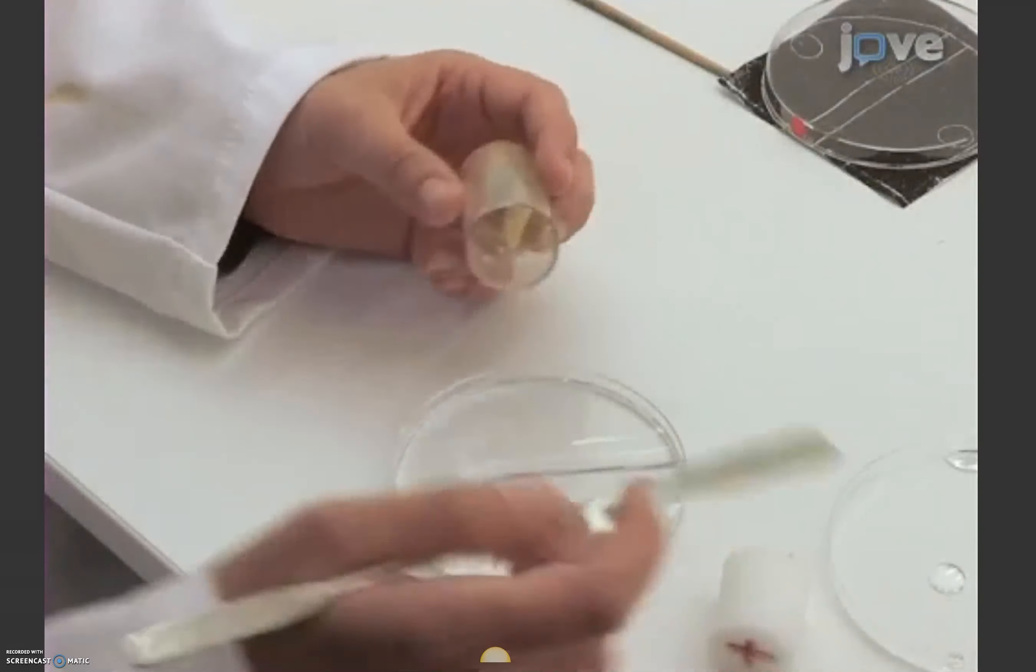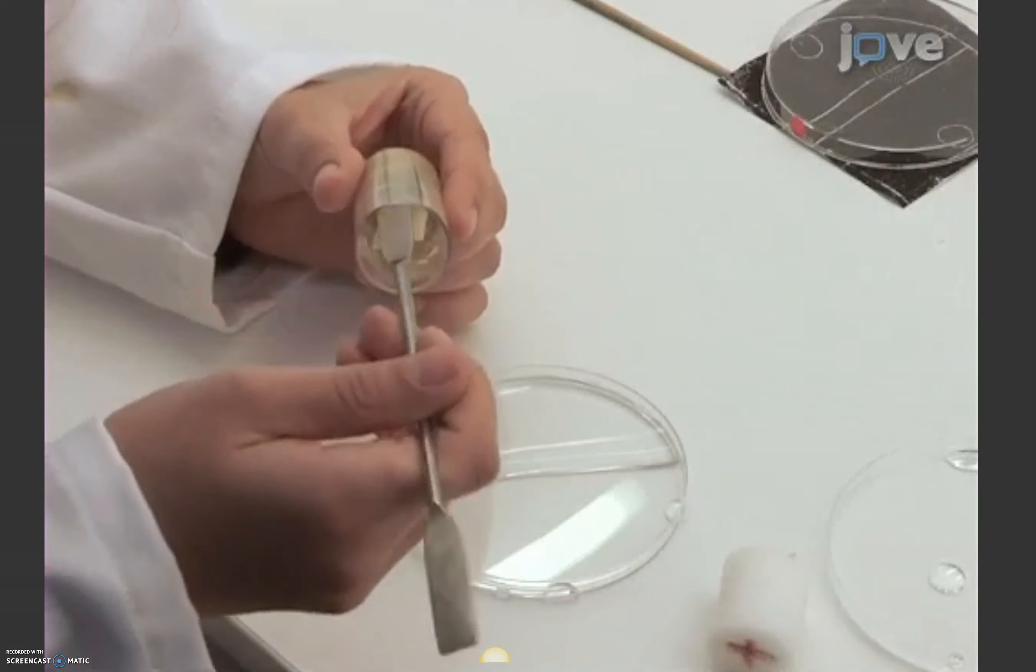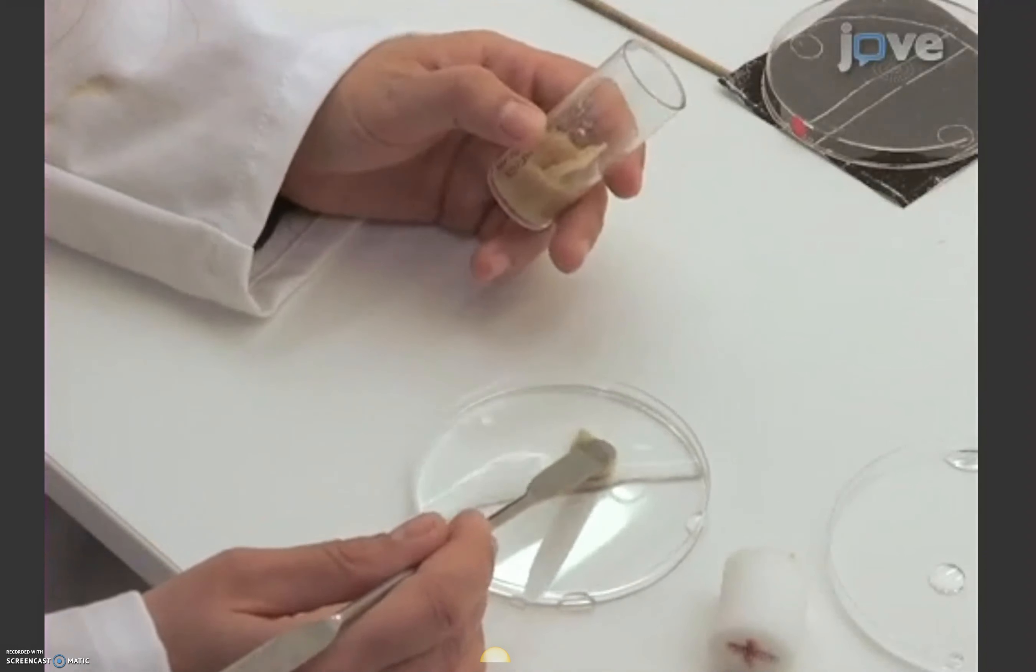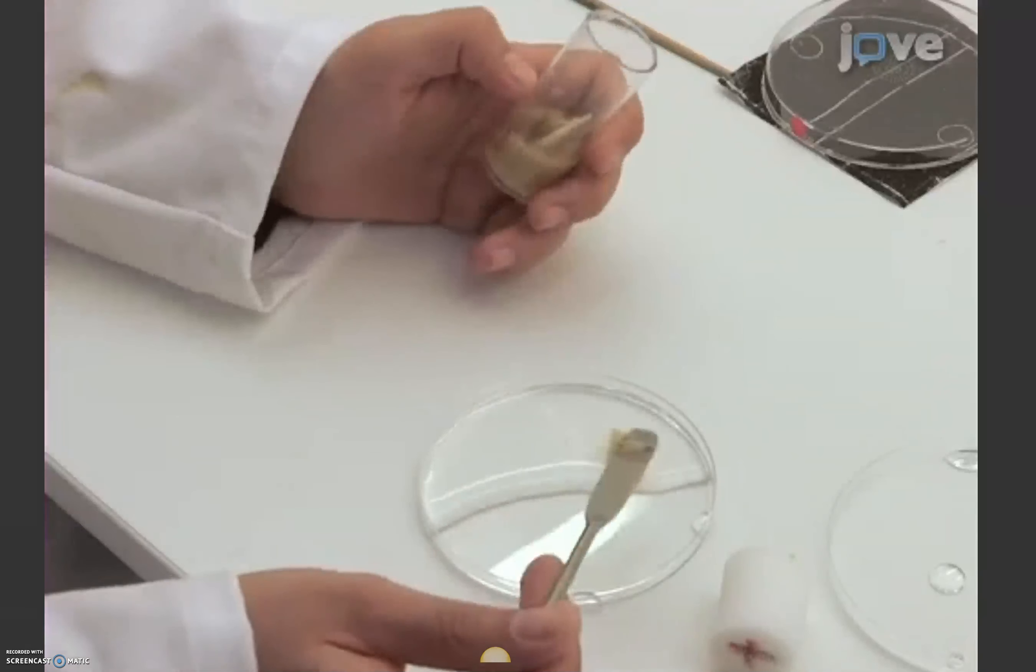Begin by collecting 30 feeding, not wandering, third instar larvae from a food vial. This protocol can be run at any time of day. It is independent of circadian rhythms.